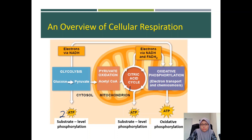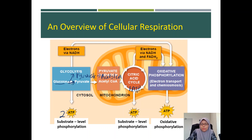For every turn of the citric acid cycle it produces one ATP. Remember that we have two molecules of pyruvate produced by breaking down one molecule of glucose, so we have two molecules of acetyl-CoA that enter the citric acid cycle. Therefore, for one molecule of glucose, the citric acid cycle produces two ATP. So up to here, it produces only four ATP total.